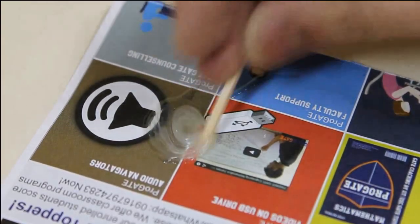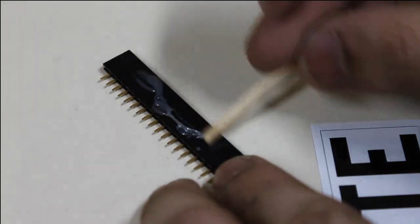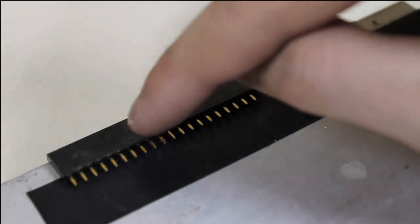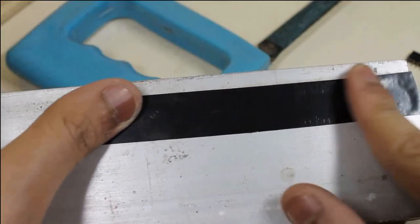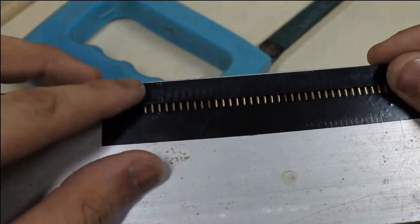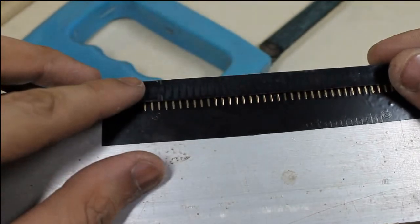I then mixed two-component adhesive and added it to one of the female headers for Arduino and the OLED. But before that, I added a piece of electrical tape to prevent shorts and measured the appropriate lengths for Arduino and the display.